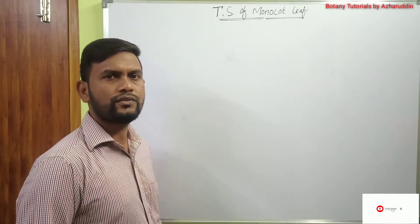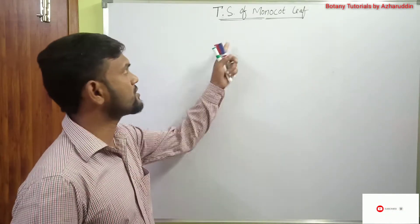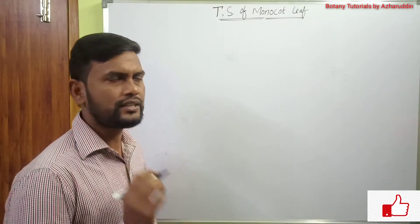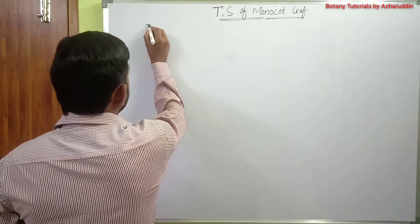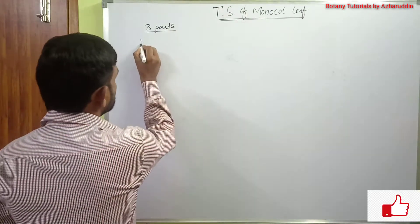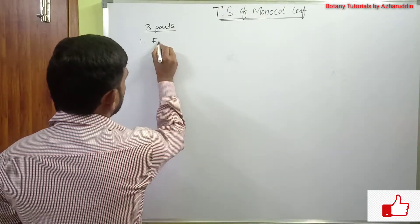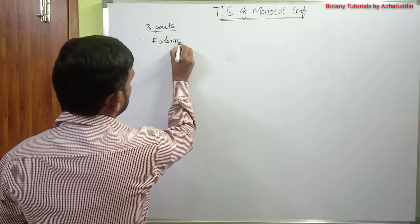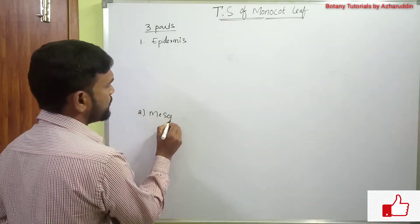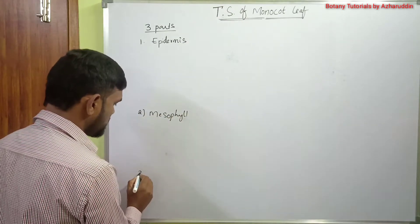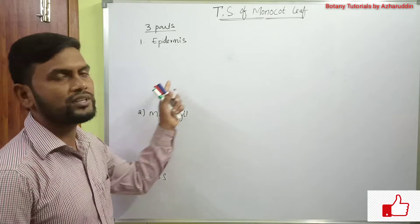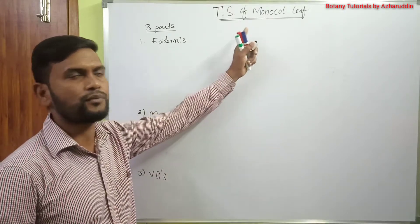Hello everyone. In this session we will take up another topic, that is the transfer section of monocot leaves. The transfer section of monocot leaves shows mainly three parts: number one, epidermis; second part is mesophyll; and third part is vascular bundles. These three parts are observed in the transfer section of monocot leaves.